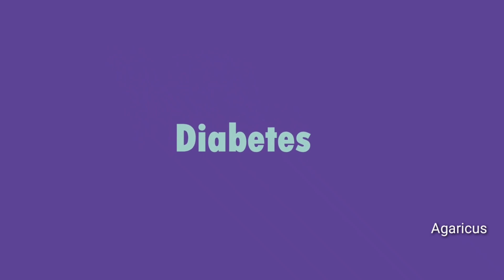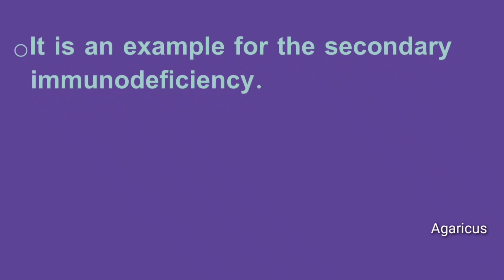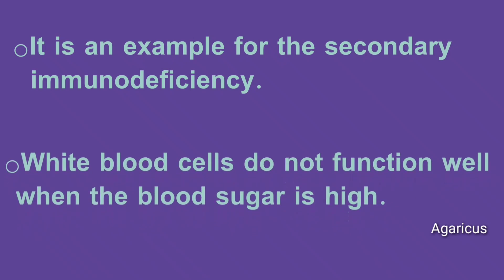Next, we discuss diabetes as an example of secondary immunodeficiency. White blood cells do not function well when blood sugar is high, making the host more susceptible to infections.